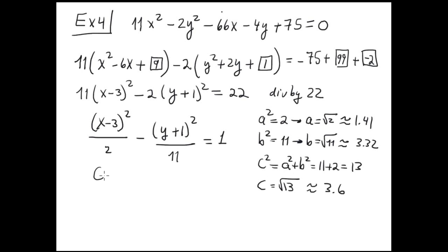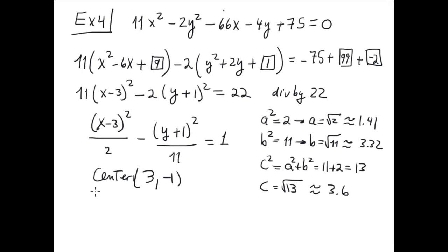The center of this hyperbola is located at the point (3, -1). We can see the vertices and the foci. The equation for the asymptotes is Y minus K, K is negative 1, equals plus or minus B, B is radical 11, divided by A, radical 2, parenthesis X minus 3. This is the equation for the asymptotes. You can leave it like that.